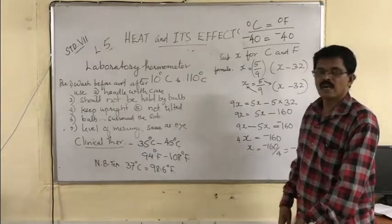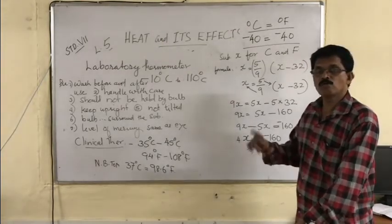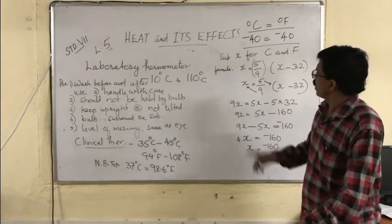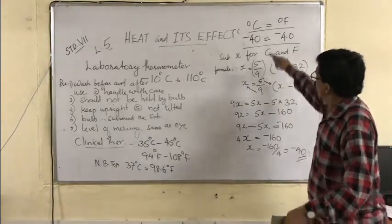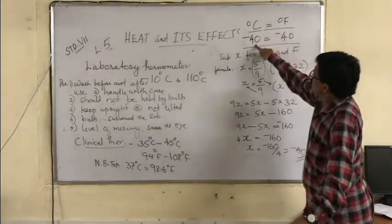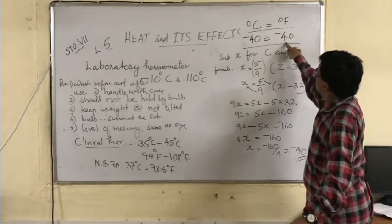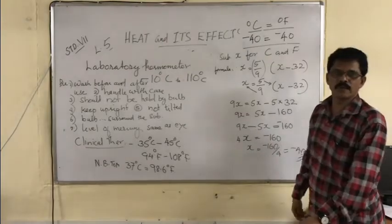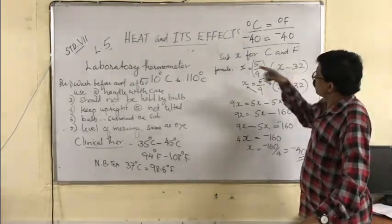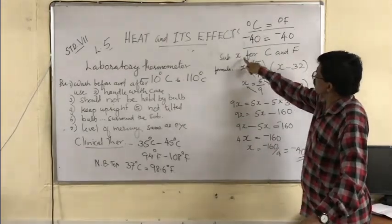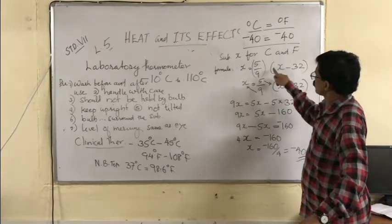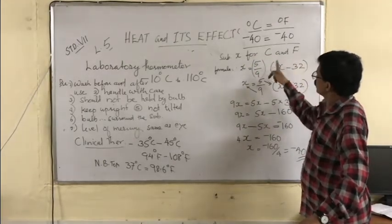Now let us solve how to get that minus 40 value. We have to go through this. So degree Celsius minus 40 is equal to degree Fahrenheit minus 40. How does this come? We have to do one calculation for that. This is the formula.